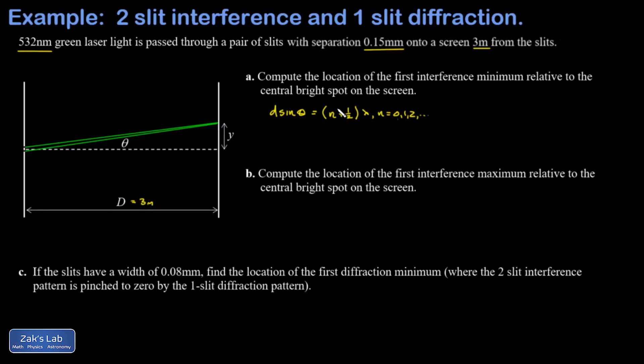The approximation we make for small angles is that sin θ is approximately equal to tan θ, which is just y over big D. Making that substitution, I get little d y over big D equals one half λ. Solving for y, I get big D λ over two little d.